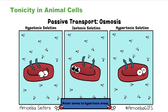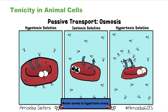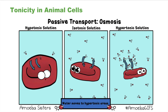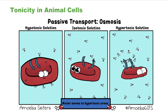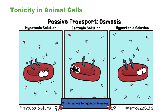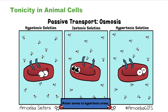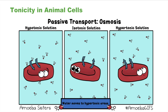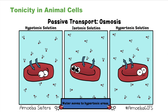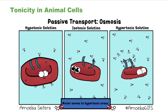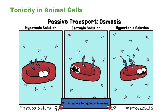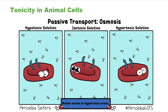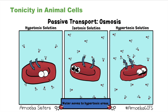On the right-hand side, the cell is placed into a hypertonic solution. The concentration of solute is higher outside and the concentration of water is lower outside. Water moves from inside the cell to outside to create equilibrium. As a result, the cells shrink, become dehydrated, and eventually die.